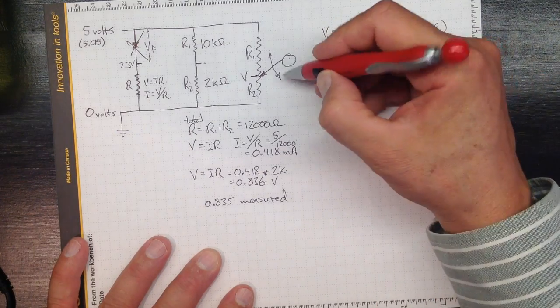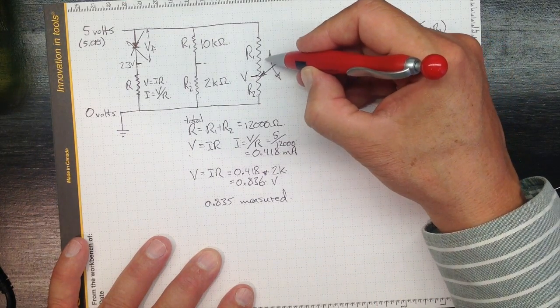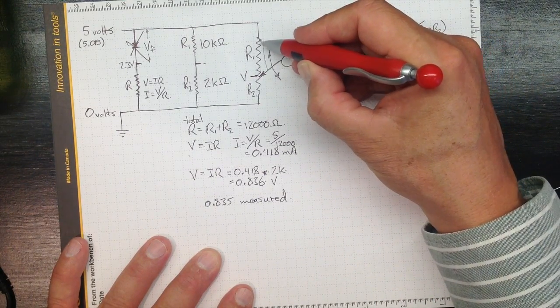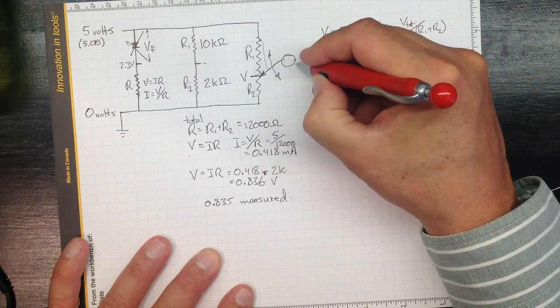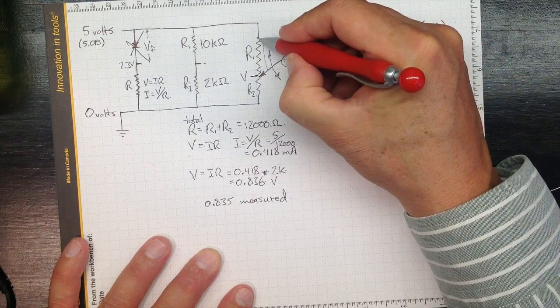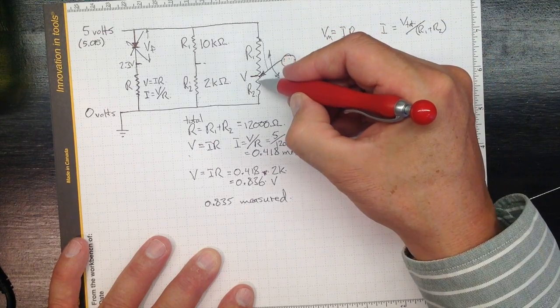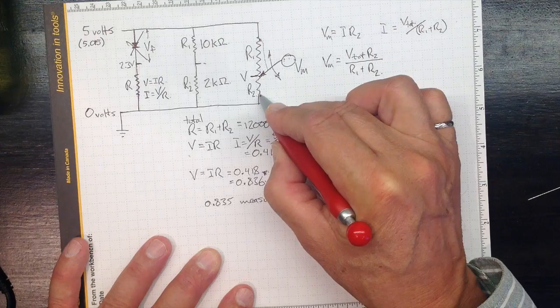And what we see is as we move this slider up and down, when it moves up to here, our measured voltage, the Vm that we get on our slider, will be 5 volts. When we move down here, we'll get down to 0 volts.